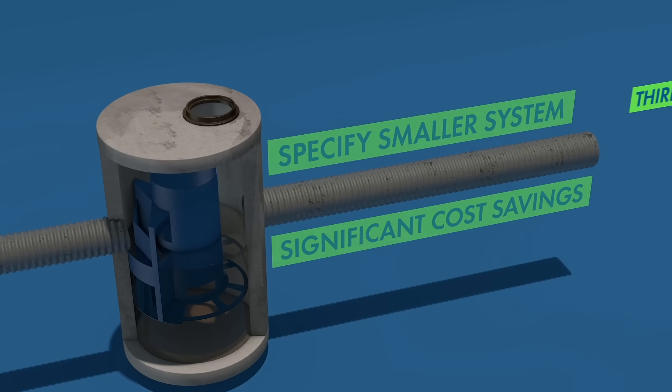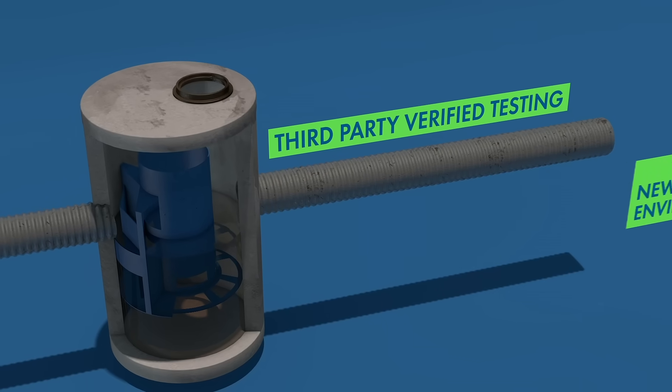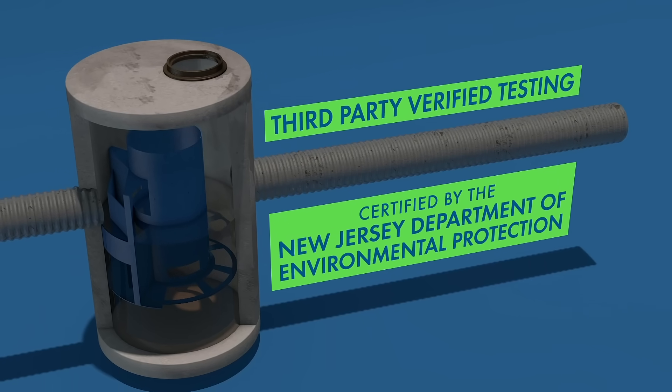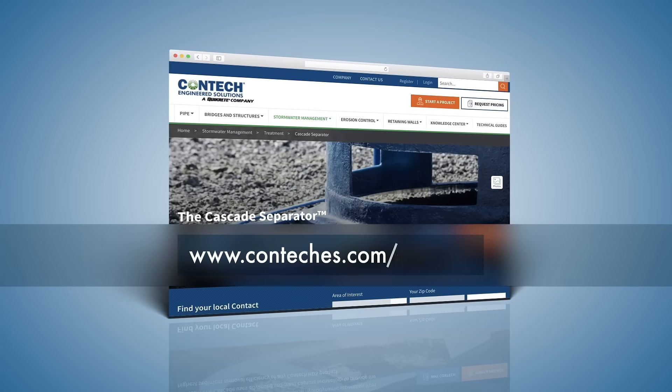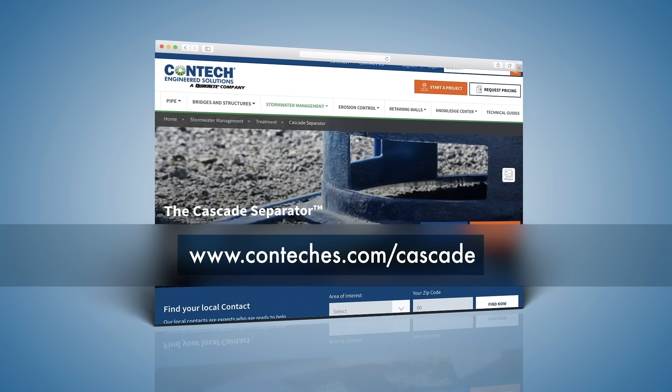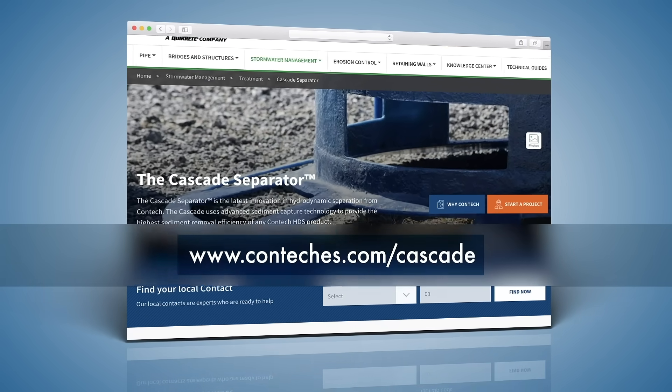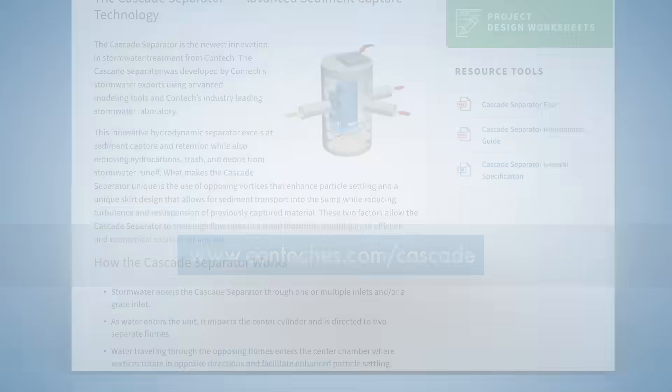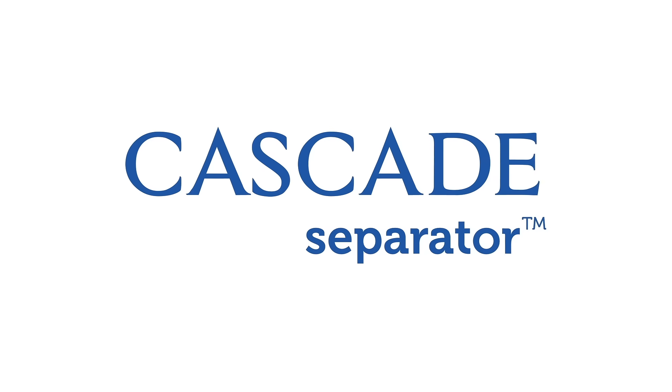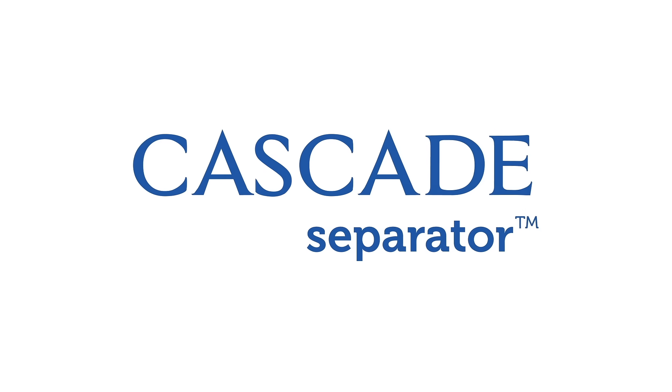The Cascade Separator has third-party verified testing and is certified by the New Jersey Department of Environmental Protection. Please visit www.contechcs.com/Cascade for more information on Cascade, including technical information. The Cascade Separator, an innovative solution to stormwater treatment.